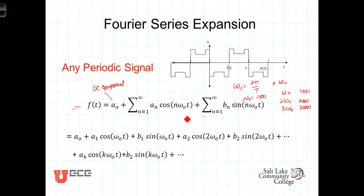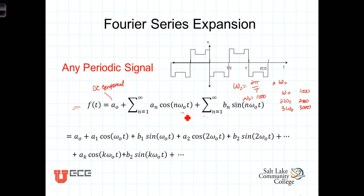It's a wonderfully concise way of representing what is otherwise a fairly complicated computation. If we expand this, then f(t) equals a0 — the DC offset — plus a1 cosine(ω0 t), plus b1 sine(ω0 t), plus a2 cosine(2ω0 t), plus b2 sine(2ω0 t), continuing on for as many terms as we want.